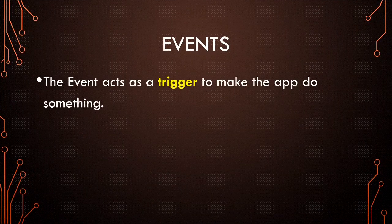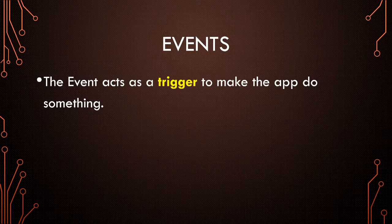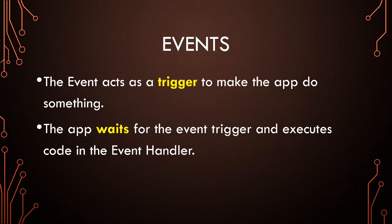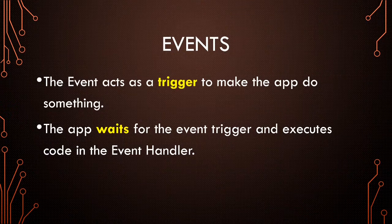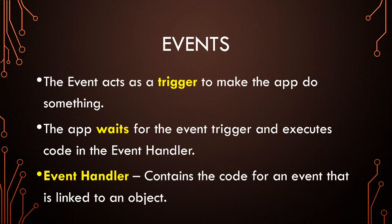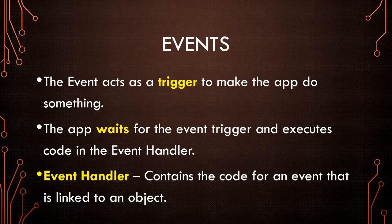So with the events, the event acts as a trigger to make the app do something. So the app waits there until it finds that trigger and then it determines whether or not there's any code attached to that trigger. And if there is, it runs that code in the event handler. The event handler just has the code that is attached to an event that is linked to an object.